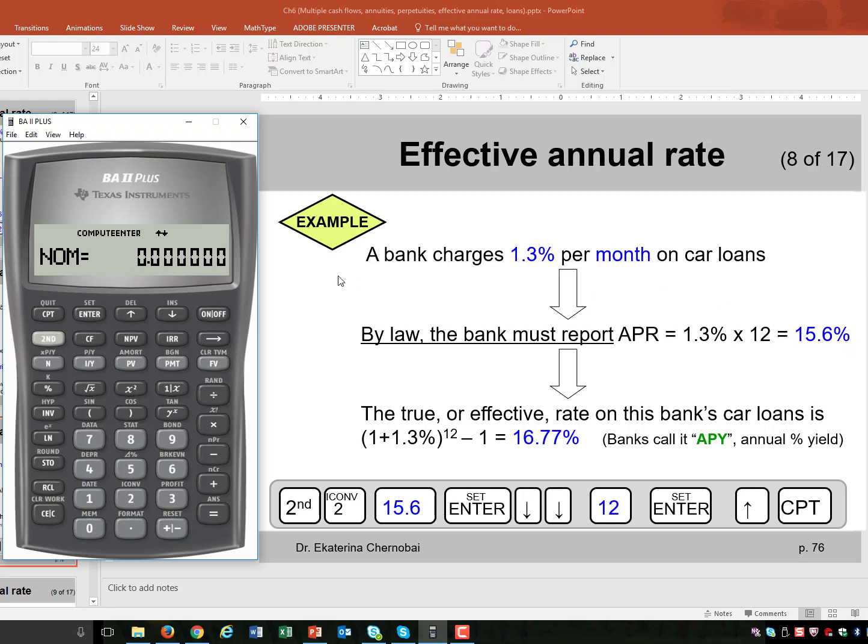What's the nominal rate? 15.6. I press 15.6, enter. Then down arrow key, down arrow key again. I stop when I see compounding per year. I change it to 12, 12, enter.